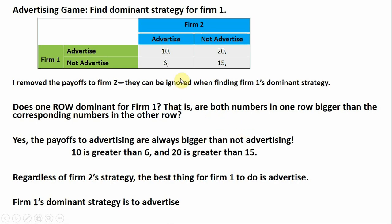So what we're going to try to do is find dominant strategies. We're going to see if firm one has a dominant strategy. To simplify this, we don't need the numbers for firm two, so I'm leaving those blank. All we have to do is concentrate on the numbers for firm one. The key question: does one row dominate for firm one? That is, are both numbers in one row bigger than the corresponding numbers in the other row? In the advertising row, 10 is bigger than 6, and 20 is bigger than 15. Therefore, firm one has a dominant strategy — advertising will always lead to a higher payout regardless of what firm two does. That's firm one's dominant strategy: it is to advertise.